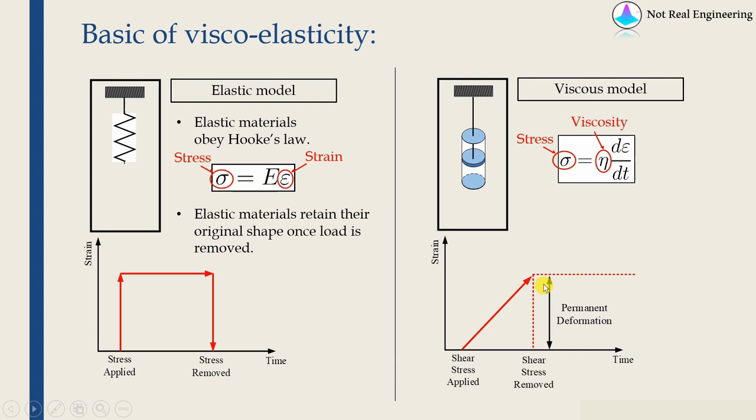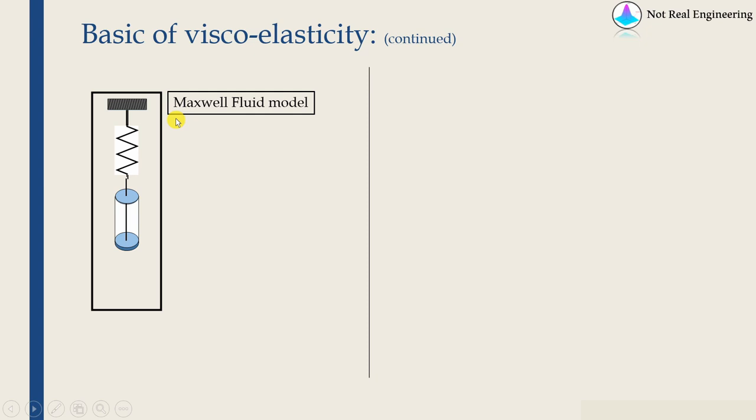And as name suggests, viscoelastic material is nothing but which has property of both of them. So how to model viscoelastic material? It's simple. We have to use spring as well as dashpot. So the simplest form is a spring and a dashpot in series. This is also known as Maxwell fluid model.